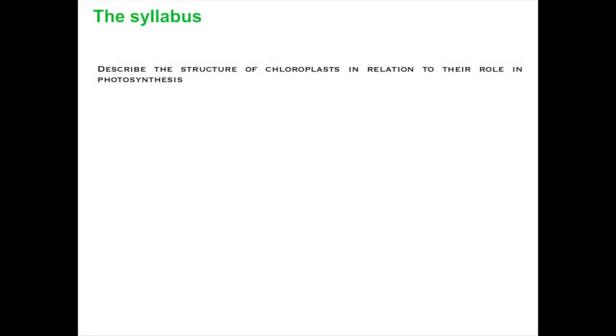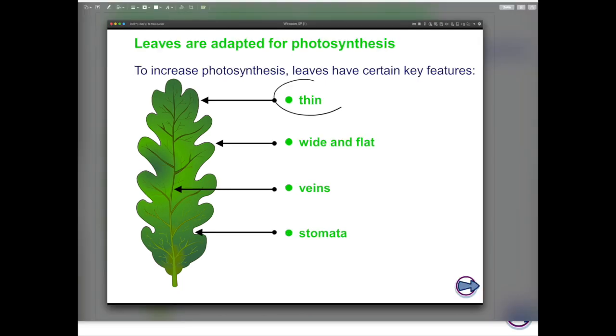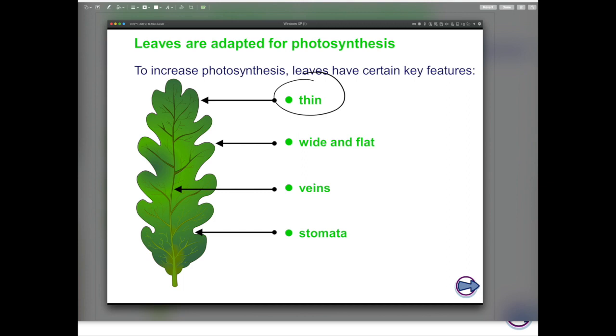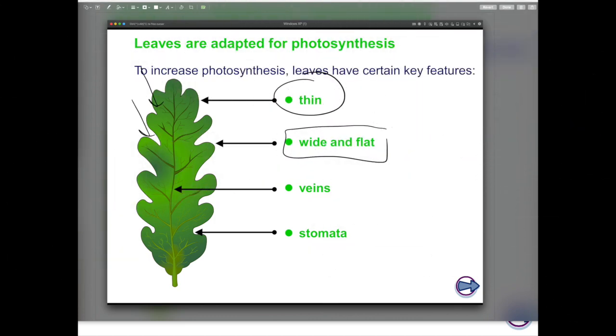We are now going to look at the internal structure of the leaf and we'll study the different adaptations that leaves have. Leaves are thin, they are wide and flat, they have veins and there are plenty of stomata. Leaves are thin because this provides a short distance for diffusion of gases. Gases diffuse much faster if the distance across the leaf is thinner. Being wide and flat means the leaf can take more light energy for the process of photosynthesis.